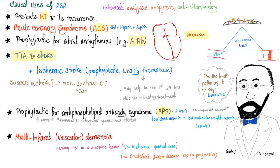Clinical uses of aspirin: antiplatelet, analgesic, antipyretic, anti-inflammatory. First, let's talk about antiplatelet. It prevents myocardial infarction and the recurrence of myocardial infarction because it inhibits the platelets.